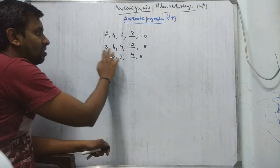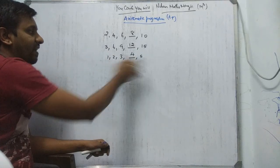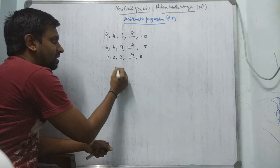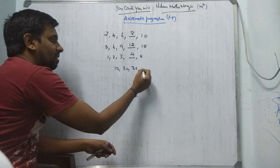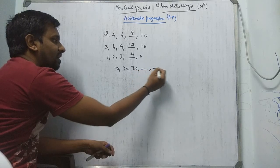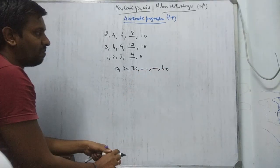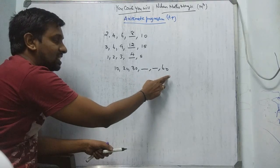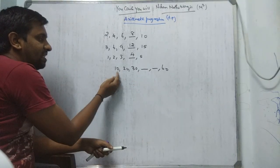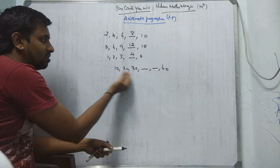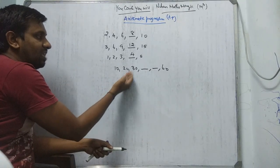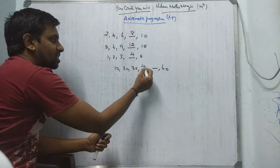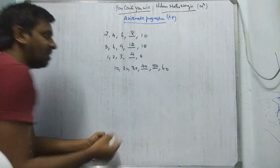Similarly here also: 1, 2, 3, 4, 5 — five terms. One more example: 10, 20, 30, dash, dash, 60. You'll check first term, second term, third term, fourth term, fifth term, and sixth term. The difference between the first two terms is 10, second and third term difference is 10. So the next term will be 40, next will be 50.